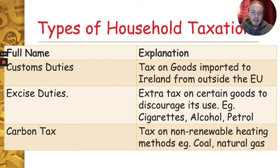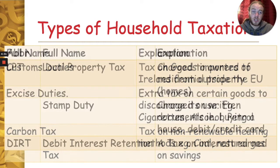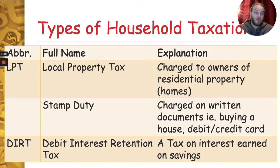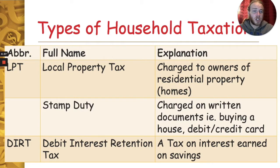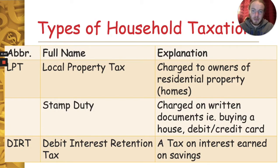Carbon tax is a tax on non-renewable heating methods, for example coal and natural gas — again, to discourage you from using them. Local property tax, LPT, is charged to owners of residential property, so if you own a house for people to live in, you have to pay property tax.